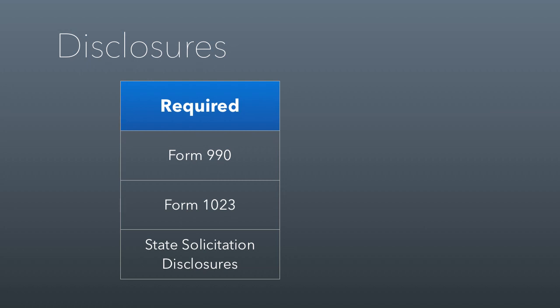In most states that require solicitation registration, there are disclosures involved as well. In Utah, for example, a lot of what you file with the state is public information. So anytime you're registering to solicit donations in any of the 40 states that require it, much of the information you provide the state becomes part of public disclosure.